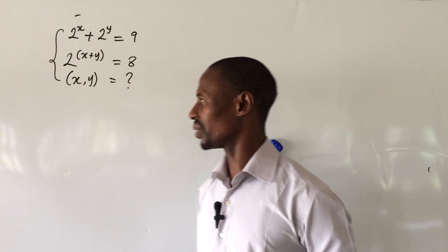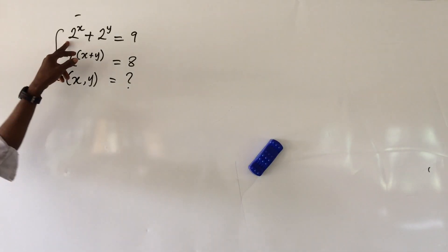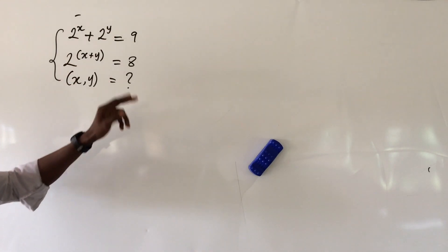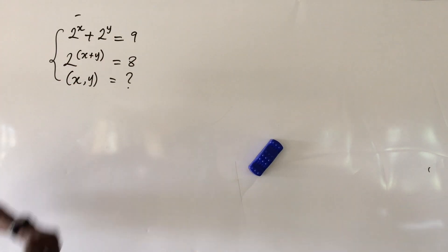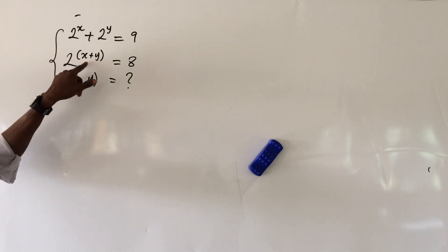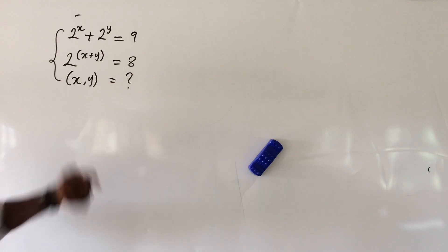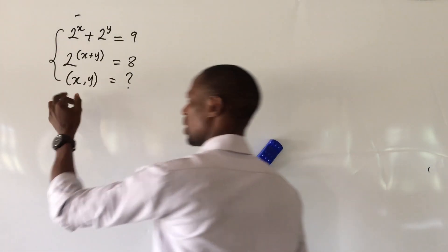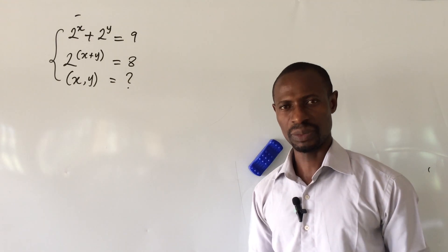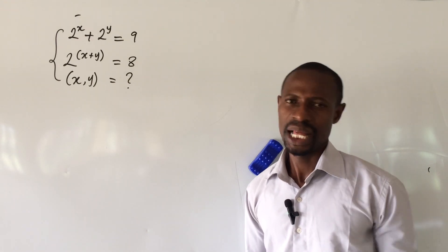With that being said, let's go into today's challenge. The question says: two to the power of x plus two to the power of y equals nine, and two to the power of bracket x plus y close bracket equals eight. What would be the values of x and y? The two possible values for x and y — let's take our solution.